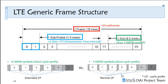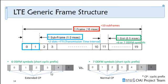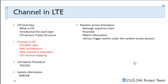The cyclic prefix is used to eliminate inter-symbol interference, or ISI. If you have a longer cyclic prefix, you will have a shorter time to transmit the symbol. So there are both advantages and disadvantages to using a long cyclic prefix.